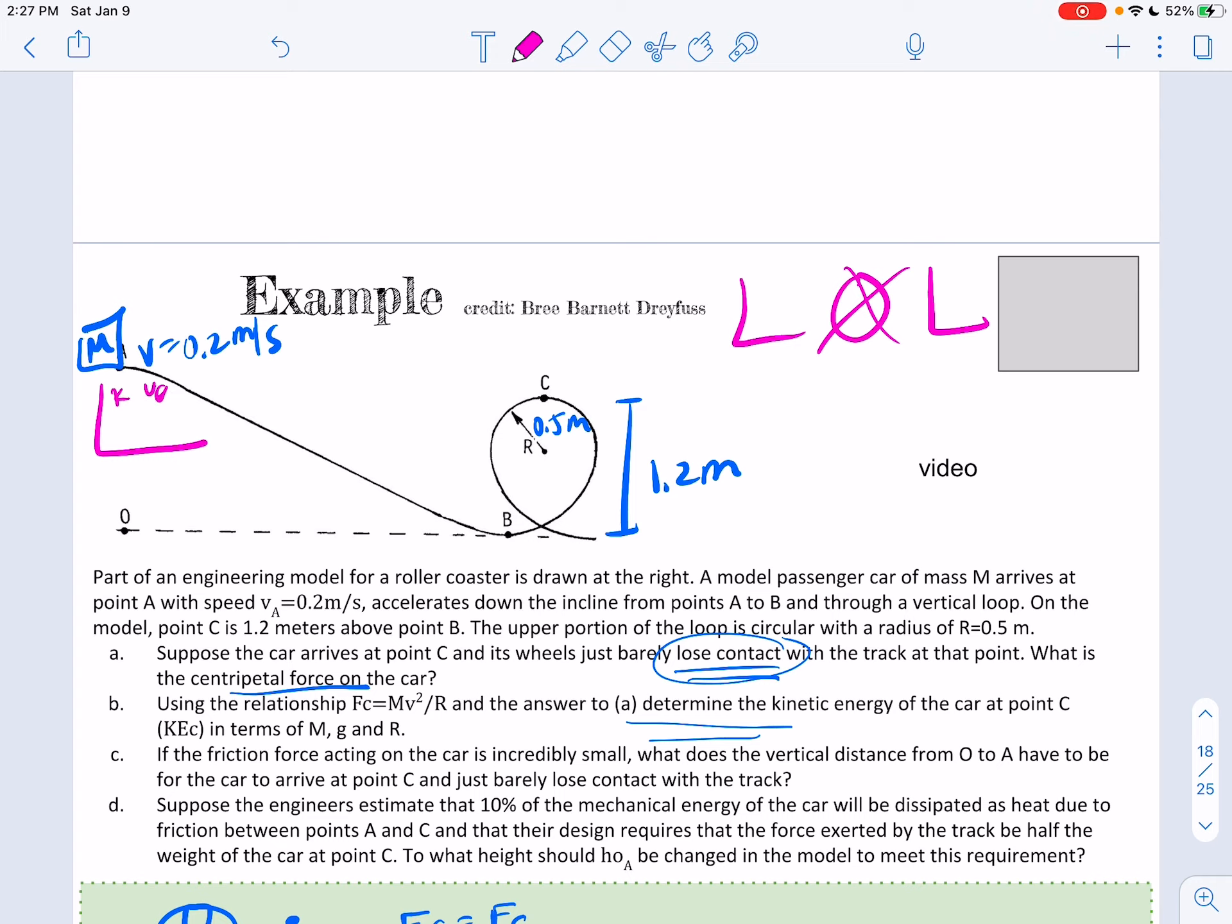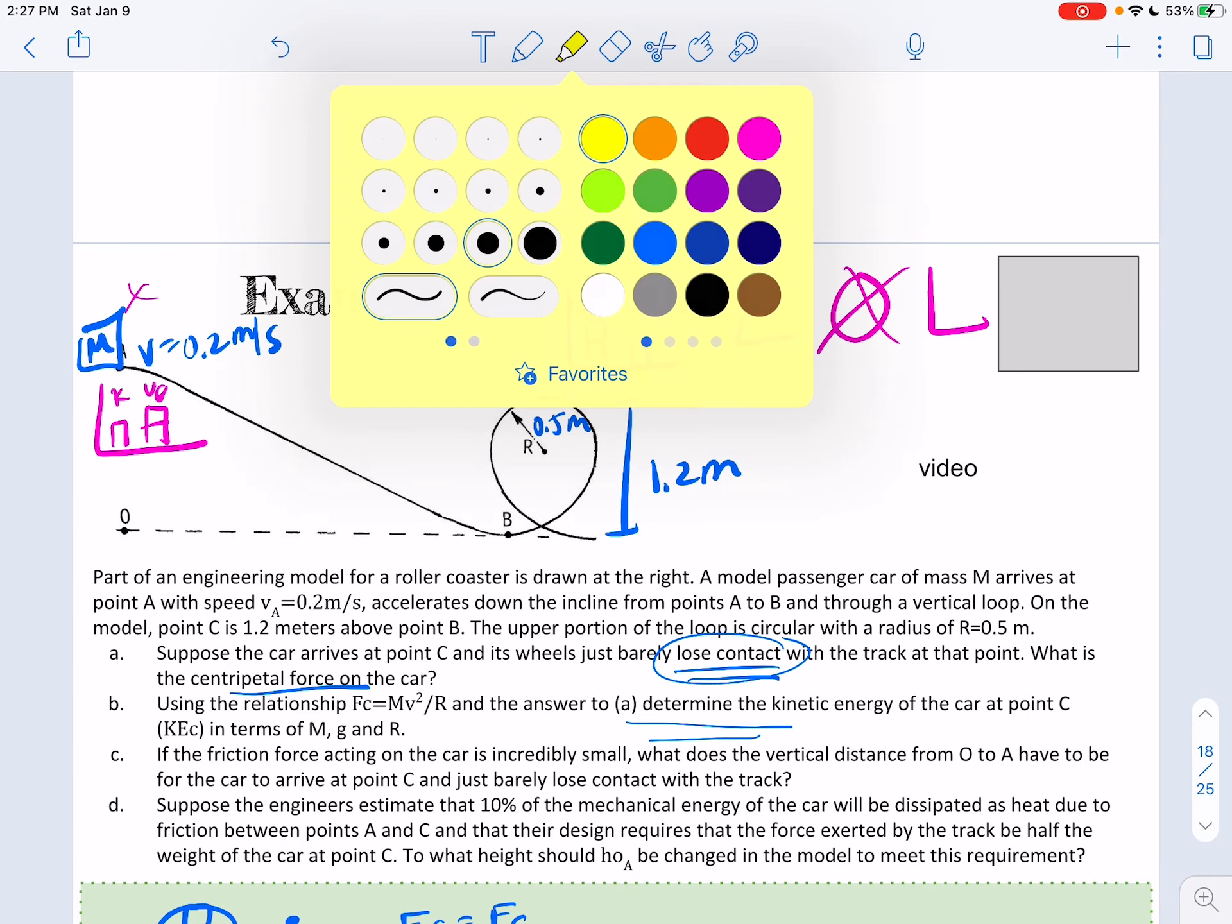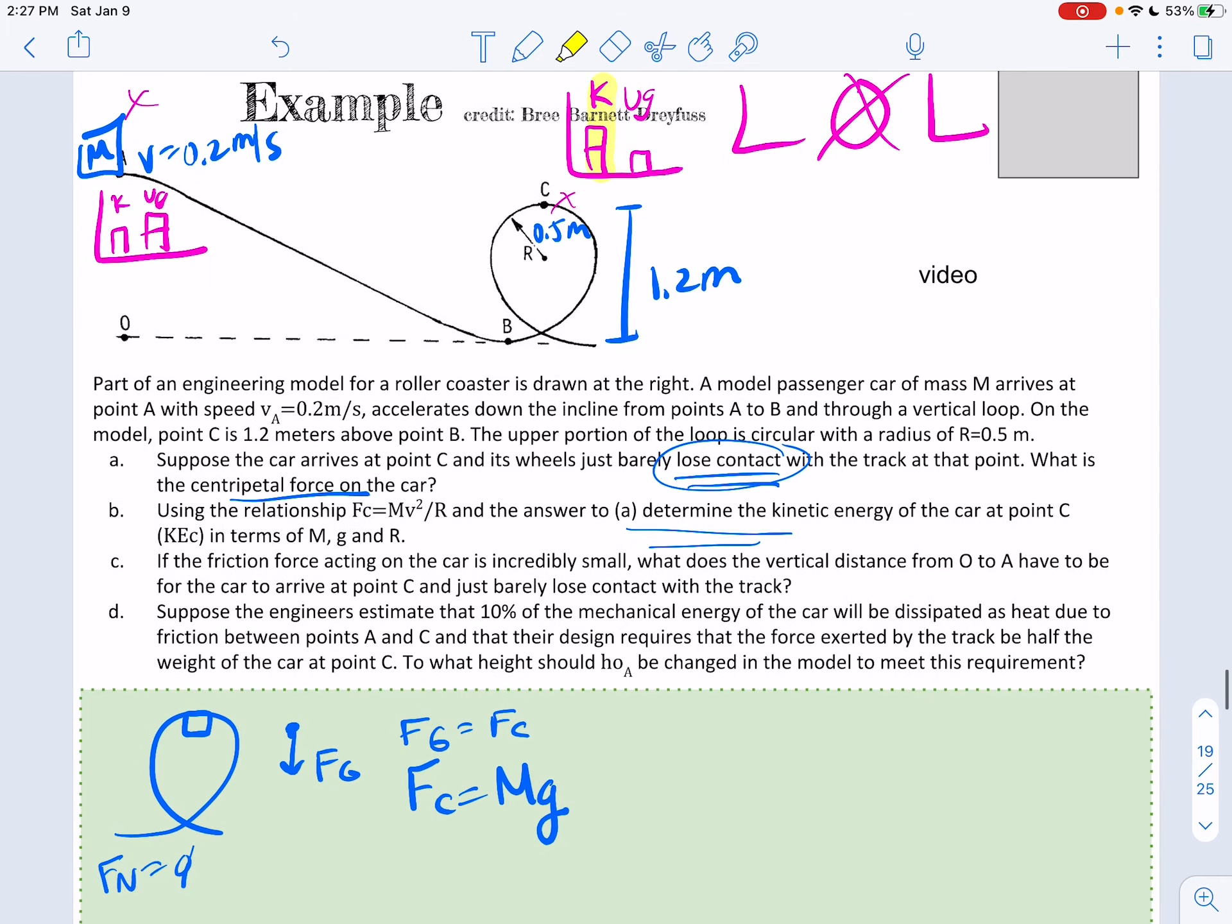So up here, I would say it's going to have some kinetic and some gravitational. And then at point C, it's going to have some lesser gravitational and probably faster, because it looks like it's a little bit lower. Is there anything else happening to it? No. So some of that gravitational potential energy from up here is going to be transferred to make it a little bit faster there at point C.